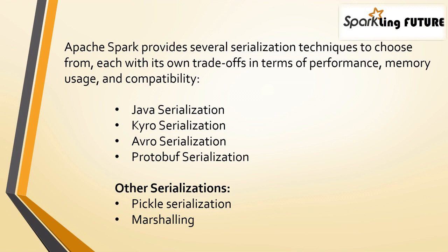The pickle module in Python is used for both serialization and deserialization of Python objects. It's a convenient way to store complex data structures, objects, and even functions in a compact binary format. Pickle serialization is useful for tasks like saving and loading model states, caching intermediate results, or transmitting data between different Python processes. It is Python-specific and might not be compatible with other programming languages.